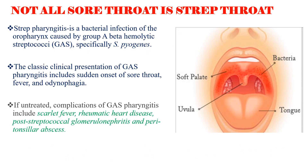Not all sore throat is streptococcal throat infection. Group A streptococcal pharyngitis is a bacterial infection of the oropharynx caused by group A beta-hemolytic streptococcus, specifically Streptococcus pyogenes. The classic clinical presentation includes sudden onset of sore throat, fever, and odynophagia.